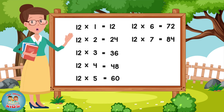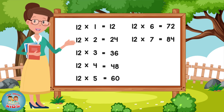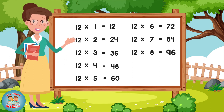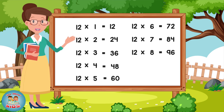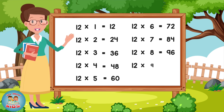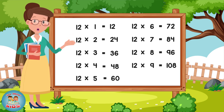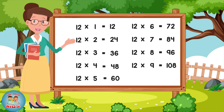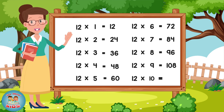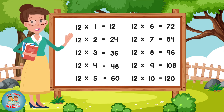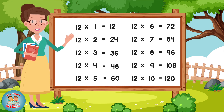12 sevens are 84. 12 eights are 96. 12 nines are 108. 12 tens are 120.